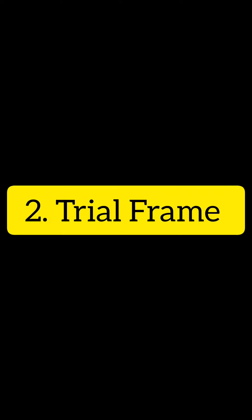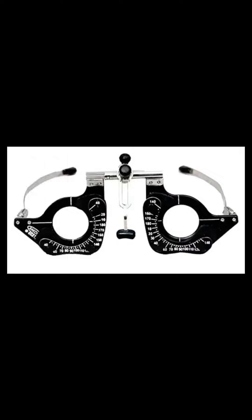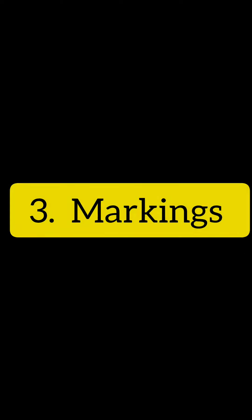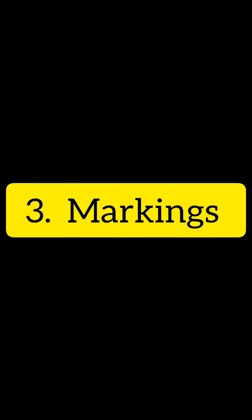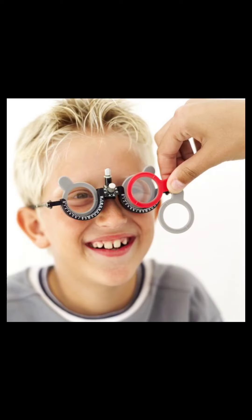Number two, the trial frame. This is an adjustable frame that holds the lenses in place during the refraction test. Number three, markings. Each lens is clearly marked with its power, making it easy for the optometrist to identify and select the appropriate lens during the eye examination.